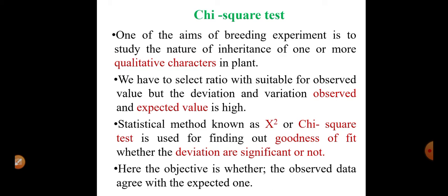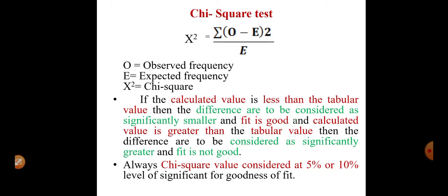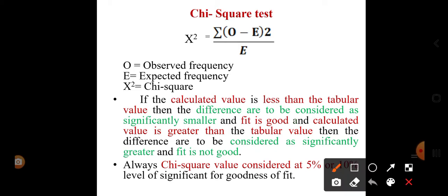To calculate this deviation or variation, a statistical method — the chi-square test, denoted by the letter X — is used to find out the goodness of fit, whether these deviations are significant or not. The objective is whether observed data agree with the expected data. The formula for chi-square is the summation of (observed frequency minus expected frequency) squared, divided by expected frequency.